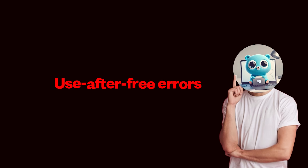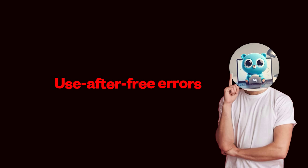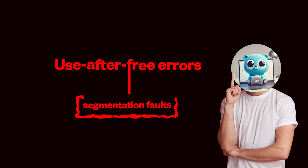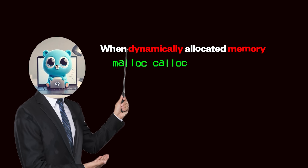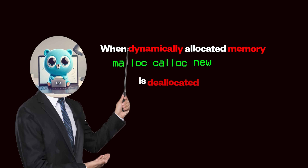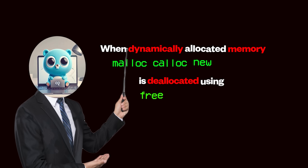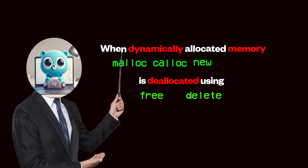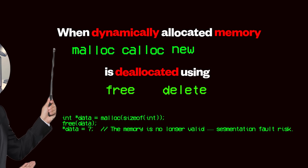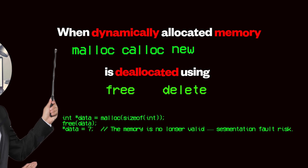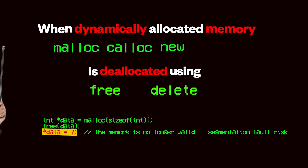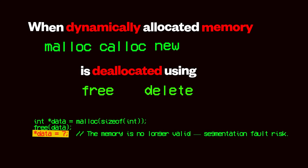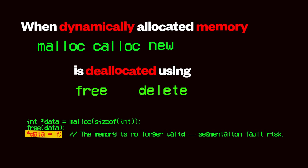Use-after-free errors are another major source of segmentation faults. When dynamically allocated memory via malloc, calloc, or new is deallocated using free or delete, the pointer still holds the address of the now invalid memory. Using this pointer to access memory is a classic mistake.